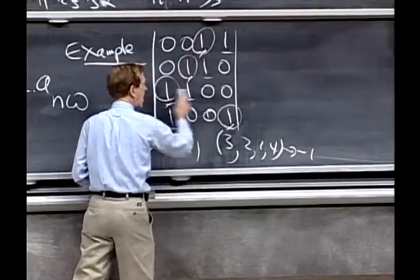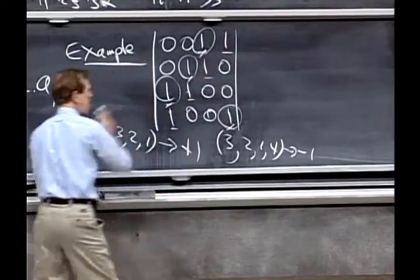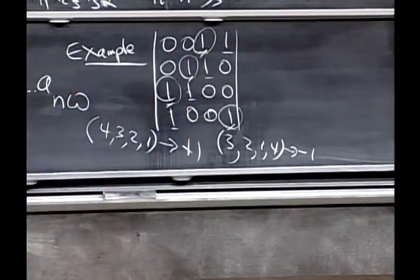So if I start there, this is the only one I get. And similarly, if I start there, that's the only one I get. So what's the determinant?